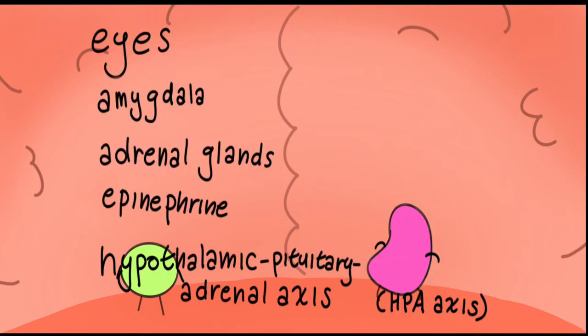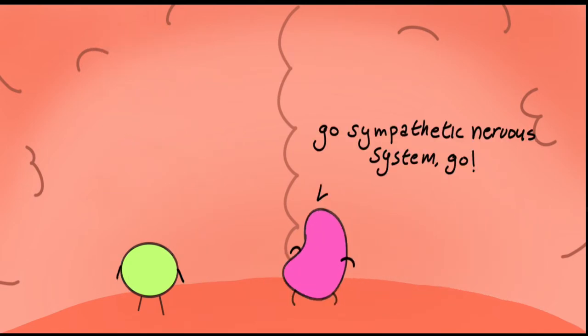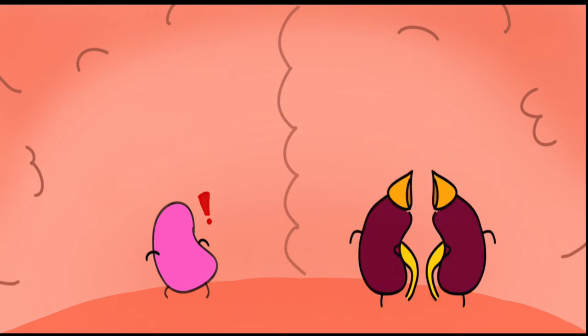If the amygdala deems the alert dangerous, it passes on a message to the hypothalamus, which triggers the sympathetic nervous system, which sends a distress signal to the adrenal glands.